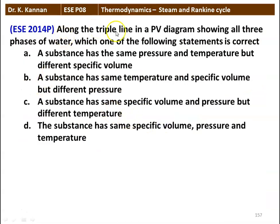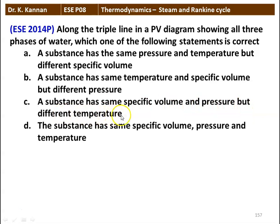The first question: along the triple point line or triple line in a PV diagram showing all the three phases of water, which one of the following statements is correct? A: A substance has the same pressure and temperature but different specific volume. B: A substance has the same temperature and specific volume but different pressure. C: A substance has the same specific volume and pressure but different temperature. D: The substance has the same specific volume, pressure, and temperature. The correct answer is: a substance has the same pressure and temperature but different specific volume in the triple point line on the PV diagram.